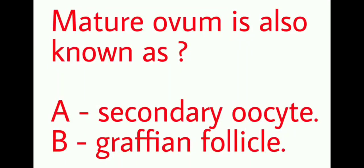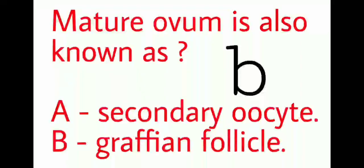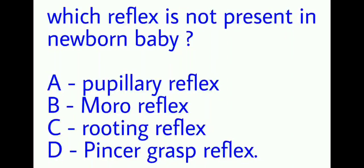Mature ovum is also known as secondary oocyte or Graafian follicle. The right answer is option B — mature ovum is known as Graafian follicle.